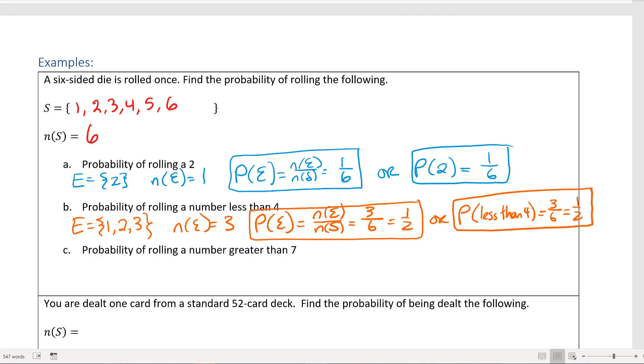And our next problem is the probability of rolling a number greater than 7. So for this event, with my die that goes from 1 through 6, how many different ways could I roll a number greater than 7? Well, there isn't any. So my E event is going to be the empty set. So n(E) is 0. So the probability of this event happening is going to be 0 out of 6, which is just 0.